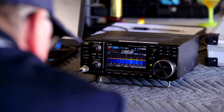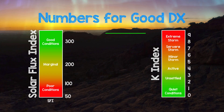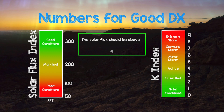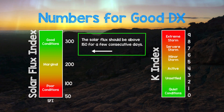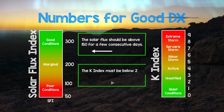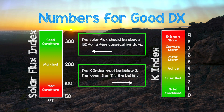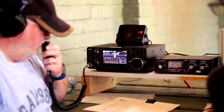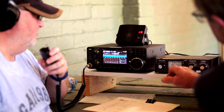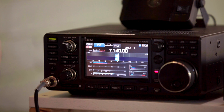So now you know what those numbers mean on solar weather sites and how to interpret them. For good DX, the solar flux should remain above 150 for a few days, with the K-index being below 2. Keep in mind, the K-index will rise after a solar flare. Solar cycle 25 is just getting going — so when these conditions have been met, the DX should be good.